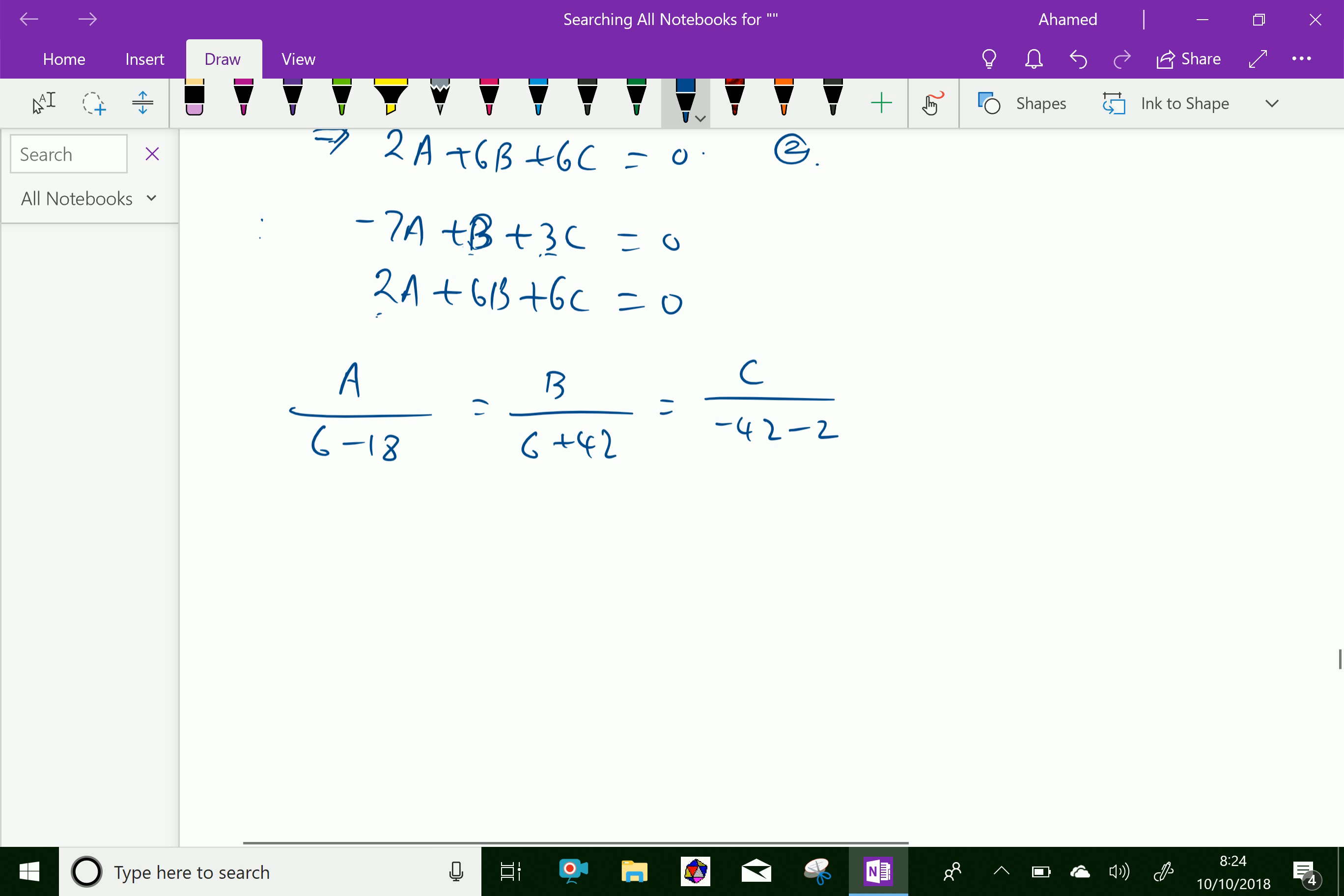So by simplifying we get A over -12 equals B over 48 equals C over -44.